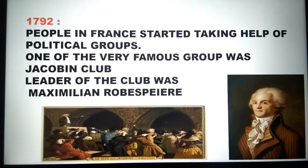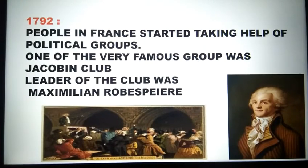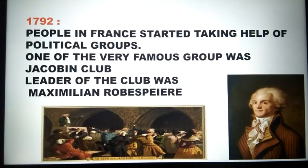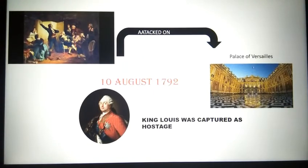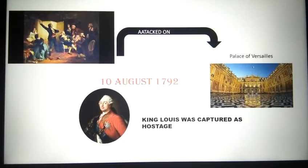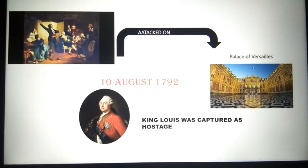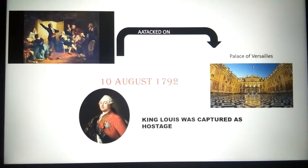In 1792, people in France started taking the help of political groups, and many political groups were formed. One very famous group was the Jacobin Club, whose leader was Maximilien Robespierre. On 10th August 1792, the Jacobin Club decided to attack the Palace of Versailles, the palace of King Louis XVI, and finally they captured it. The king was captured as a hostage.